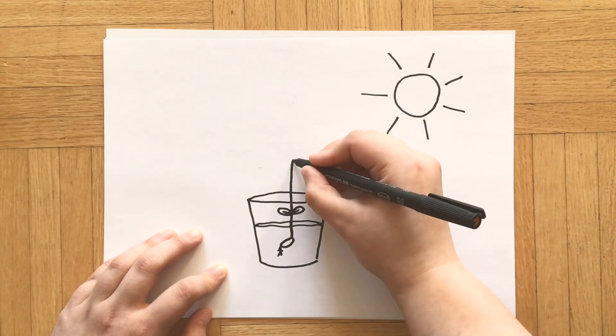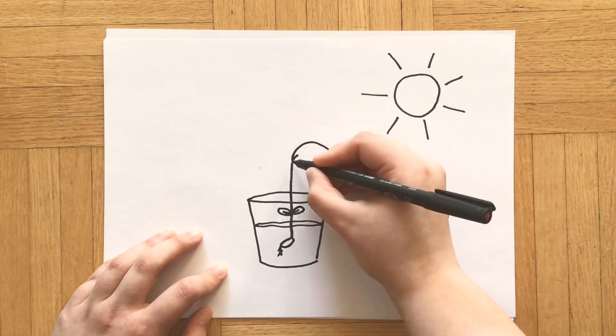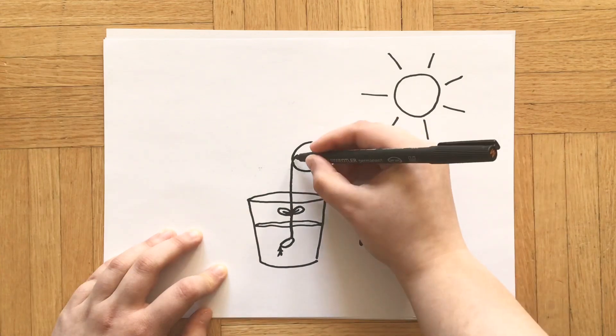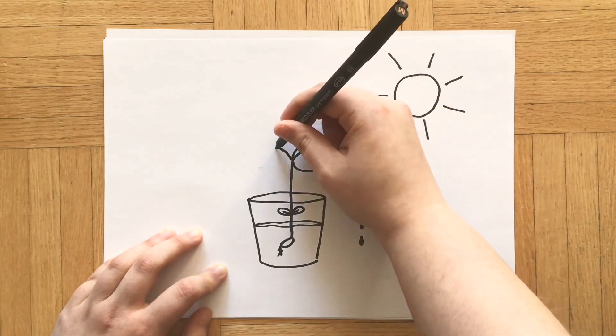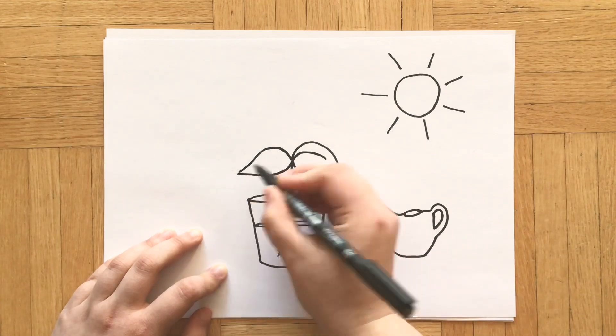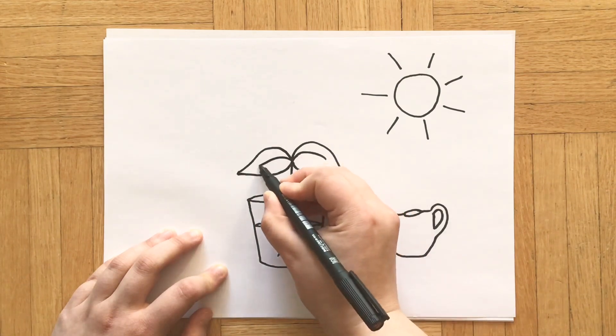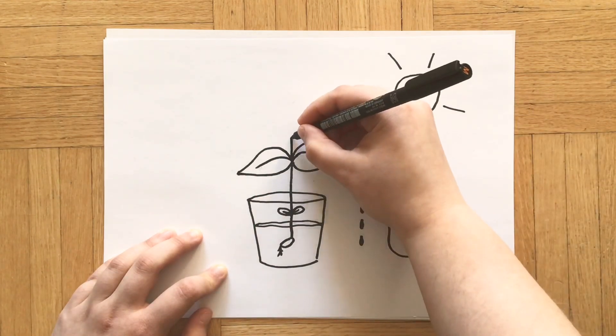Over time, the plant begins to grow and turns into a bigger plant. An adult one. Big leaves and strong roots.